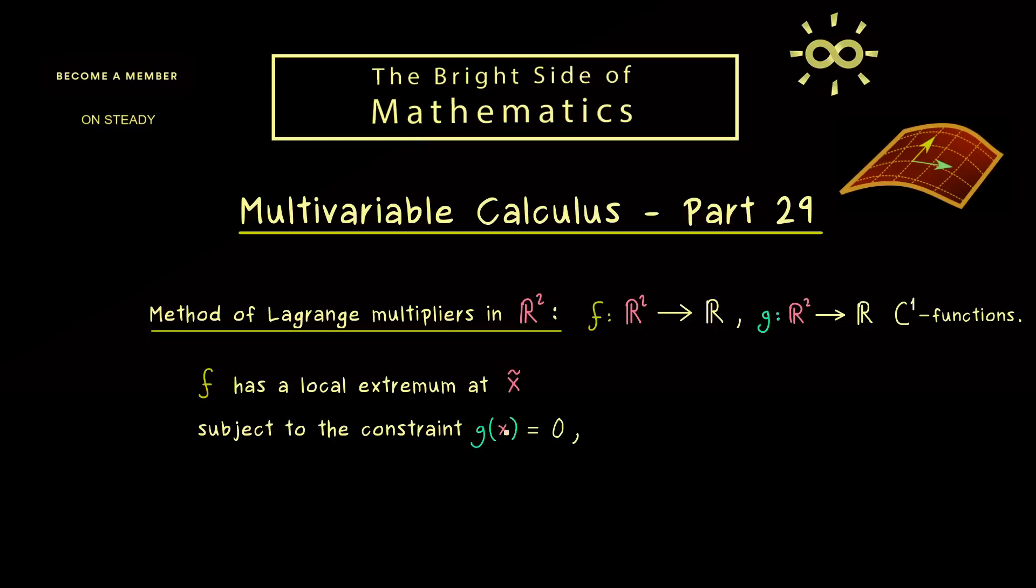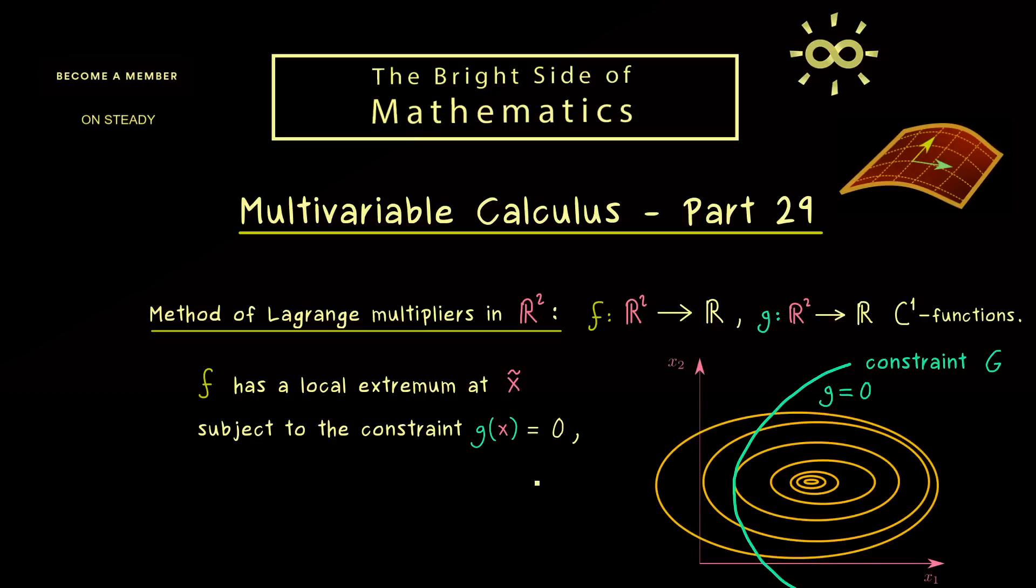More precisely, the constraint is given for the points x that satisfy g(x) = 0. Hence only on this contour line given by g we search for extrema of the function f. And now the method of Lagrange multipliers gives us a necessary condition for such a local extremum if the contour line of g here is nice enough.